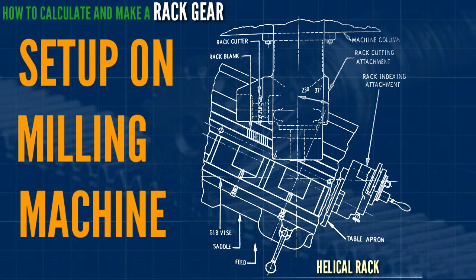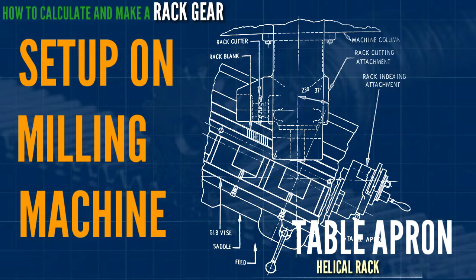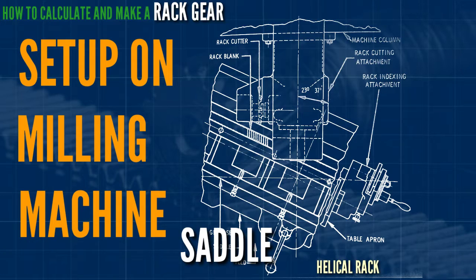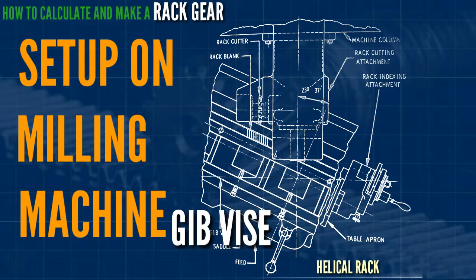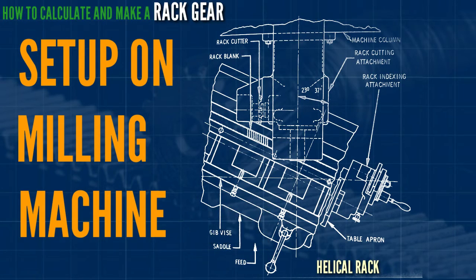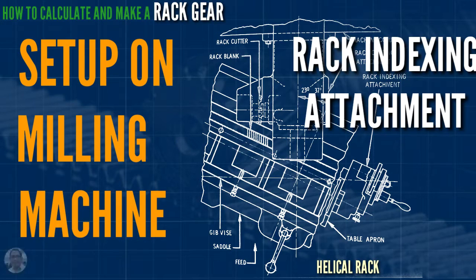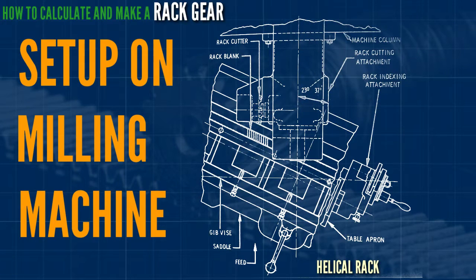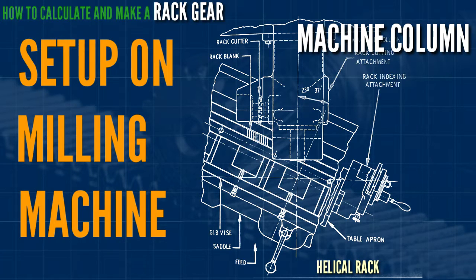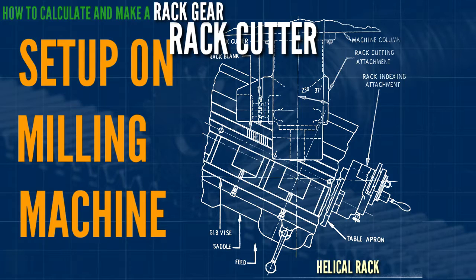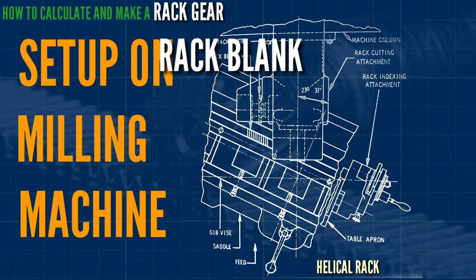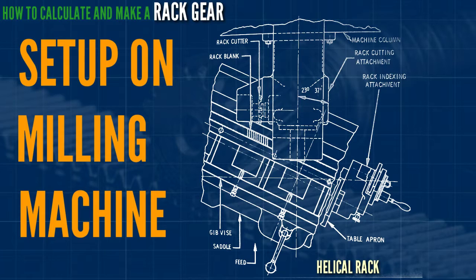Set up on the milling machine: this is the table left front, this is the feed saddle, give vise, and this is the rack indexing attachment, rack cutting attachment, this is the machine column, rack cutter, and this is the workpiece or rack blank.